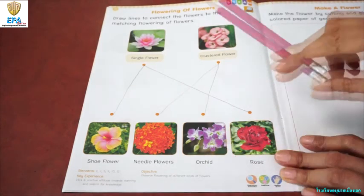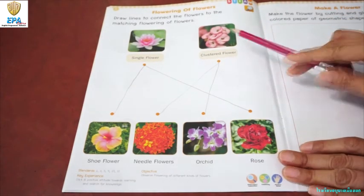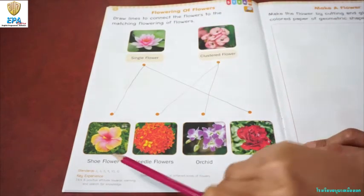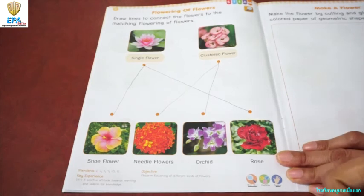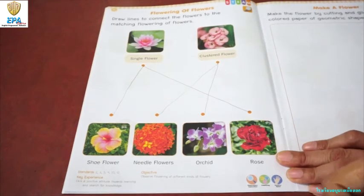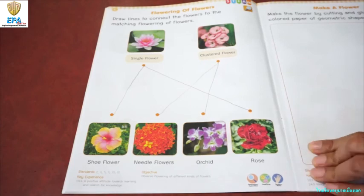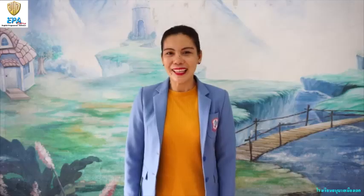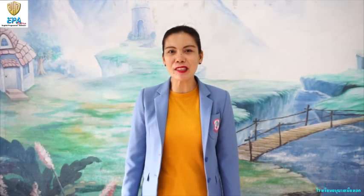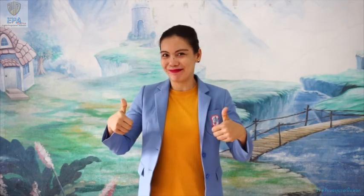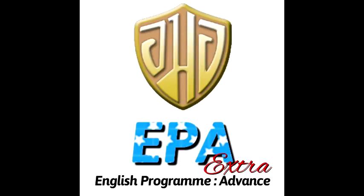Orchids are clustered flowers, and roses are a single flower, just like the shoe flower. Good luck kids, and I'll see you on our next video clip. I hope that you learned something from our discussions and our activities. I hope to be doing fun with you again next time — bye bye!